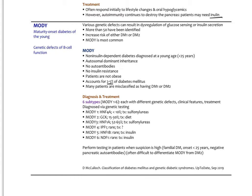MODY is non-insulin dependent diabetes diagnosed at a young age (under 25), with an autosomal dominant inheritance pattern, no autoantibodies, no insulin resistance, and patients are not obese. It accounts for 2 to 5 percent of all diabetes cases, and many patients are misclassified as type 1 or type 2. The six major subtypes screened clinically are MODY 1 through 6, each with unique genetic markers. MODY 1 is treated with sulfonylureas; MODY 2 with diet; MODY 3 with sulfonylureas; MODY 4 is uncertain; MODY 5 and 6 are insulin dependent but fortunately rare.